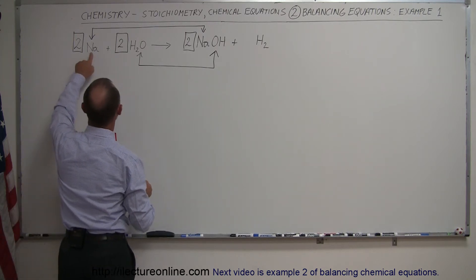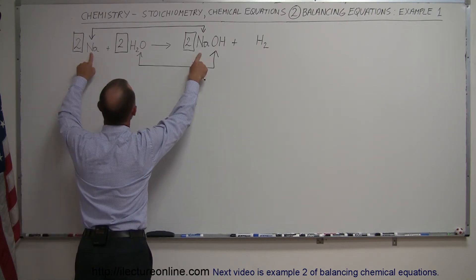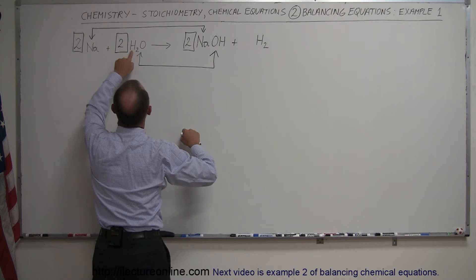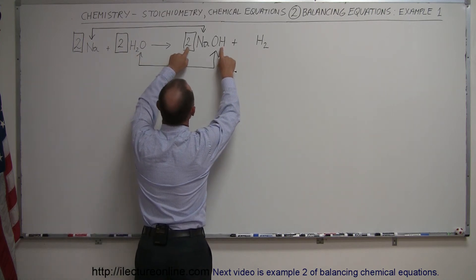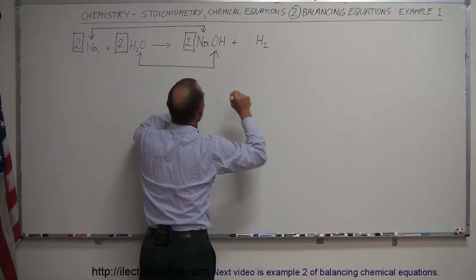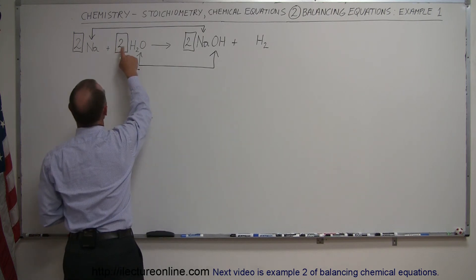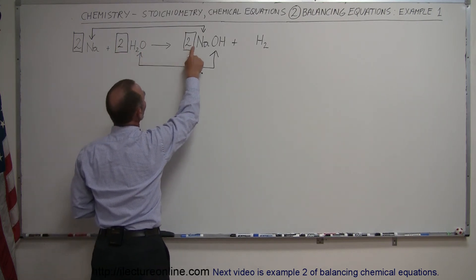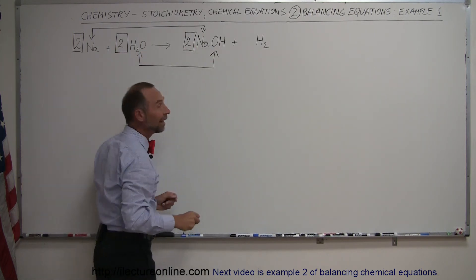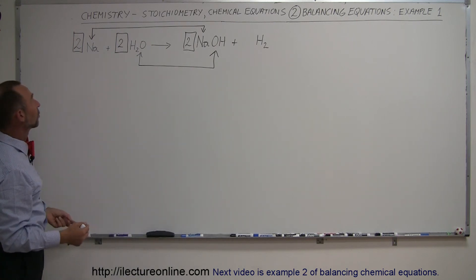So take a look here. We have 2 sodiums, 2 sodiums, sodium is balanced. We have 2 times 2, which is 4 hydrogens. We have 2 hydrogens here and 2 hydrogens there, that's 4 hydrogens. And finally, we have 2 oxygens on the left side and 2 oxygens on the right side, and that's balanced as well. And now the whole equation is balanced.